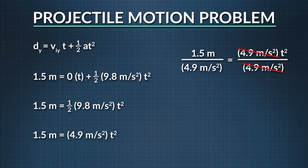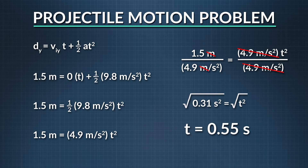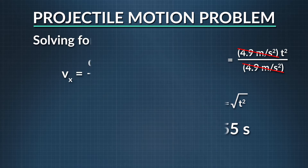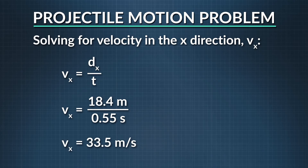1.5 divided by 4.9 is 0.31, so our equation is 0.31 equals time squared. To get time alone, we take the square root of both sides, giving us a final answer of 0.55 seconds. Now that we have time in the y direction, we use it in the x direction: v sub x equals d sub x divided by t, which is 18.4 meters divided by 0.55 seconds. We get a final answer of 33.5 meters per second — a pitch thrown at 75 miles per hour. Not bad.